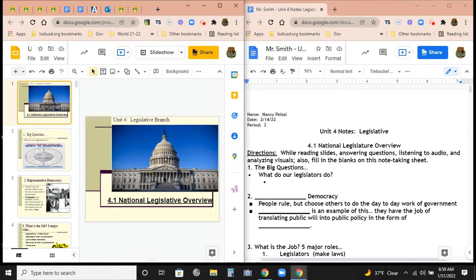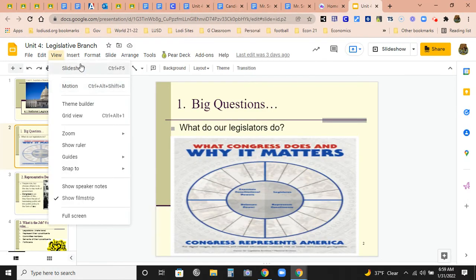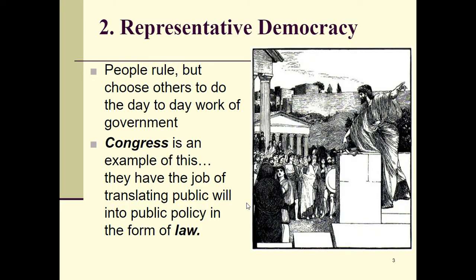What do our legislatures do? Basically, they pass laws and discuss passing laws — that's their main purpose. They exercise their constitutional power to pass laws, balance power with the executive and judiciary, and represent the people — the constituents. That's indirect democracy, but it's democracy. Congress has the job of translating the public will into public policy in the form of law.